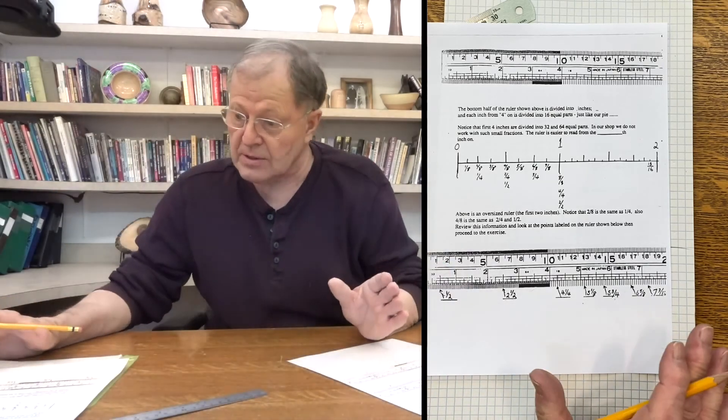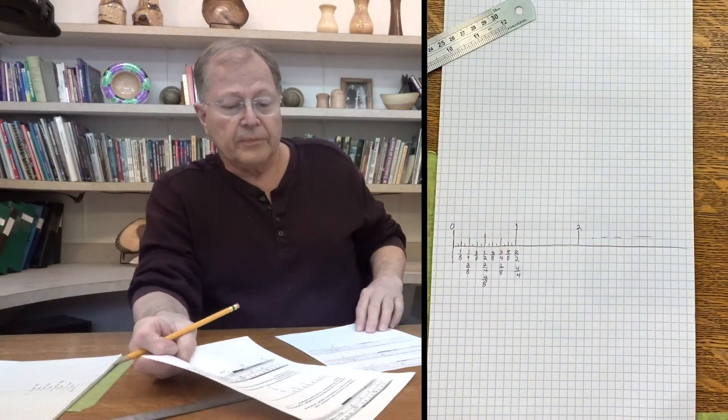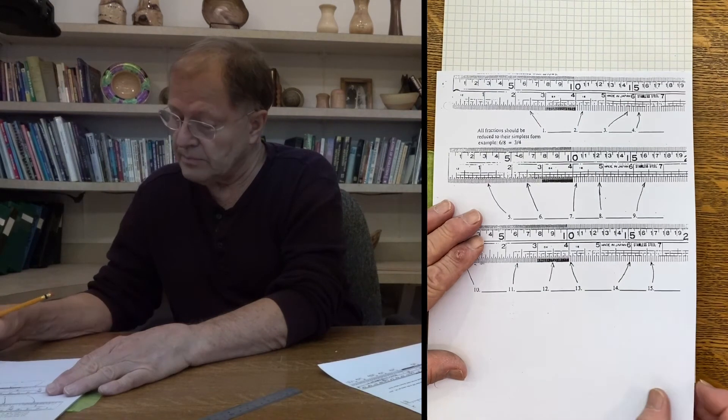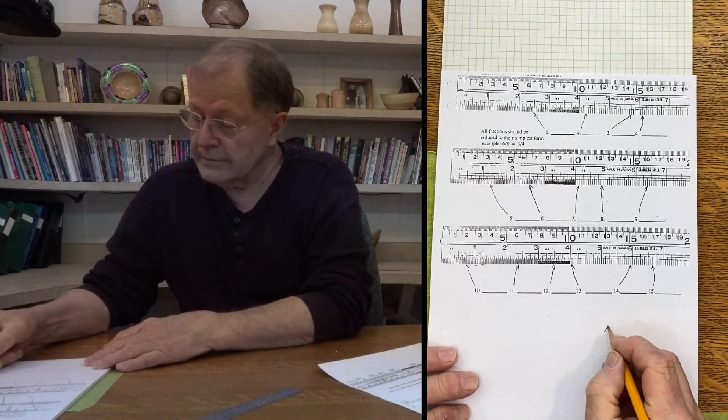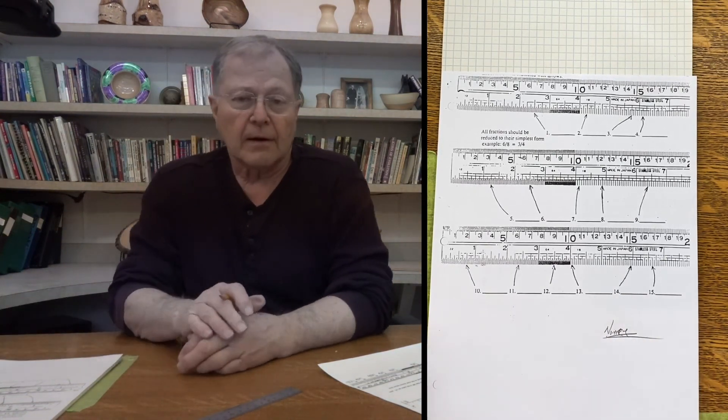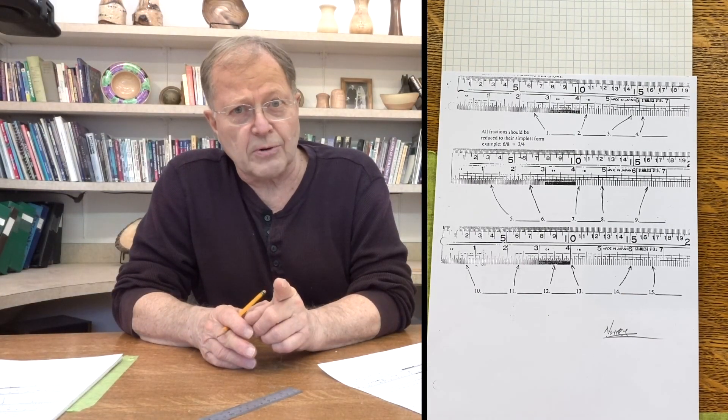So that's the way reading a ruler will work. You can get the sheets that I've just been talking about on Google Classroom. I'd like you to fill in this page. Please write your name on it. And in the next lesson, we'll make our first orthographic drawing.